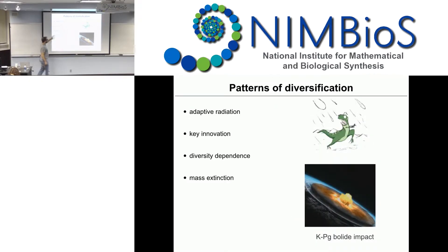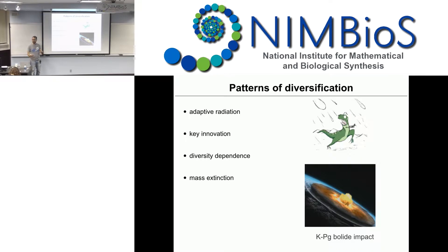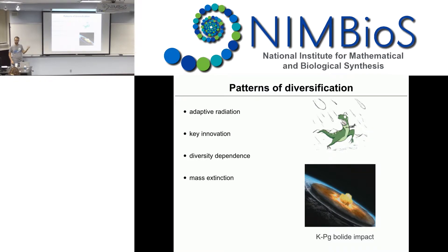Another thing I've been working on is estimating mass extinction events from time-calibrated phylogenies. Even if we only have extant taxa, we are still able to look for a signal — also in the DNA sequences — from mass extinction events.